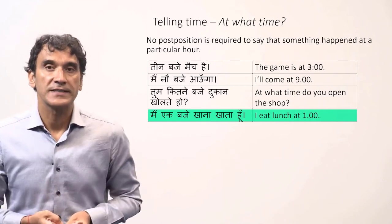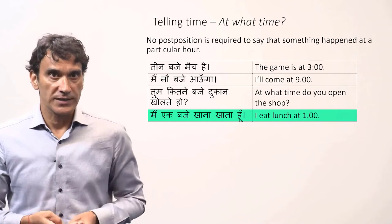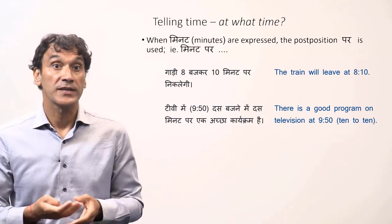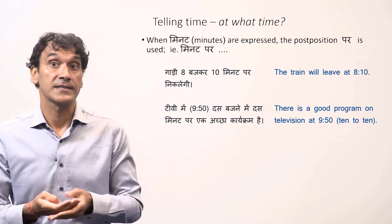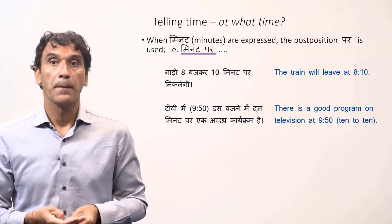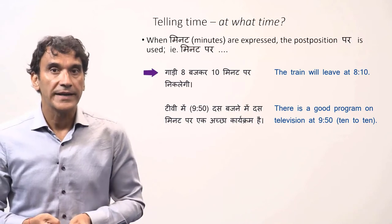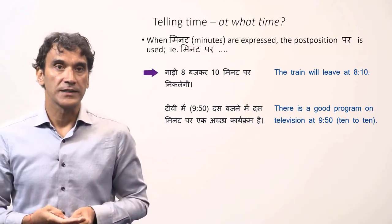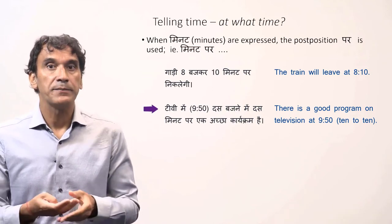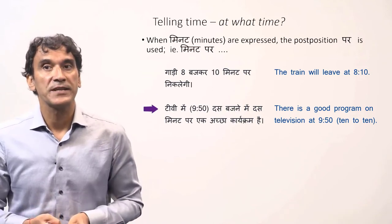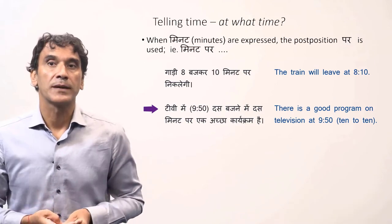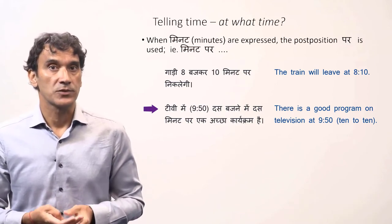When the word baje is in a sentence, no post-position is required. However, when minutes are expressed, the post-position par is used. For example: aath baje kar das minute par gaadi nikalegi — the train will leave at ten past eight. Das baje mein das minute par TV mein ek achha karikram hai — there is a good program on television at ten minutes to ten.